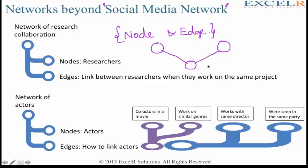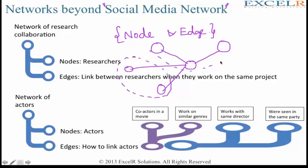If researchers are working on multiple projects - say this is one network and there is another network here - this person is also working on this project. So assume this is research project A and this is research project B. However, this person is central to both research A and B. This person is common to both research projects, so we might conclude that this person here is an expert whom everyone contacts from both of these research projects.